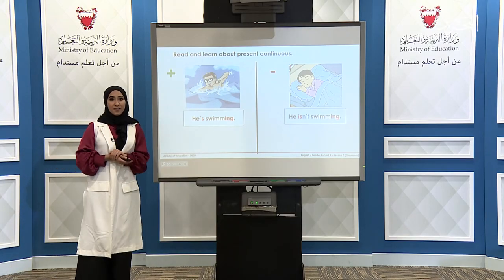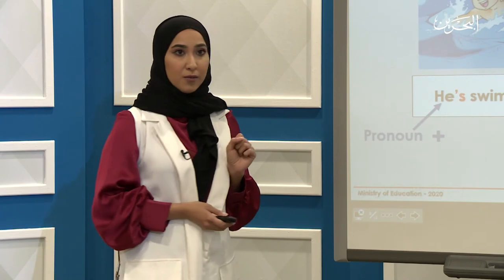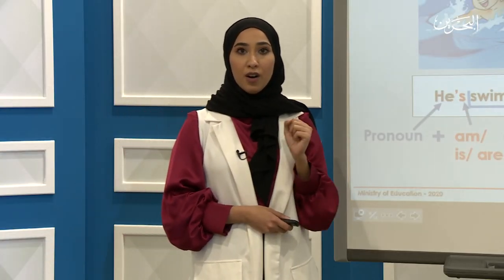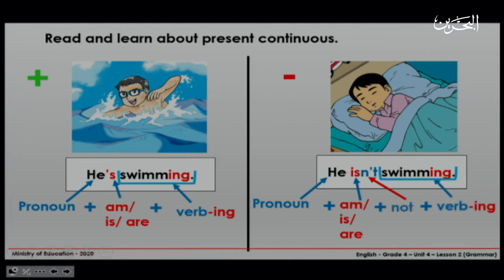Now let's look at the structure of affirmative sentences. First we start with the pronoun — in this example it's 'he' — followed by the verb to be, in this example 'is', and then we add the verb plus -ing, which is 'swimming'. For the negative form: we start with the pronoun 'he', then the verb to be 'is' plus 'not', so it's 'isn't', and then the verb plus -ing: 'swimming'. He isn't swimming.